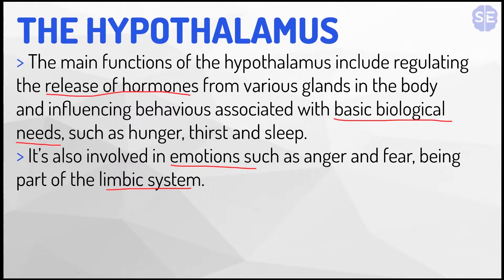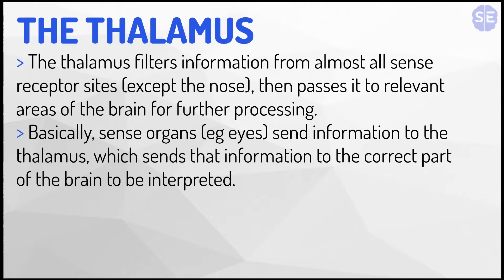Now I'll explain the next part of the forebrain: the thalamus. The thalamus filters information from almost all sense receptor sites, except the nose, and then passes it to relevant areas of the brain for further processing. Basically, sense organs like the eyes send information to the thalamus, which sends that information to the correct part of the brain to be interpreted.